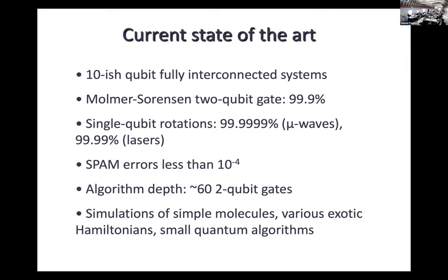Applications that have been run on these devices range from simulations of molecules such as water to various exotic Hamiltonians. In terms of simulations, the number of qubits is of order 50 — not 10 — for these Hamiltonians. Some small quantum algorithms can also be run.